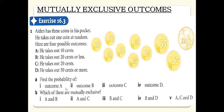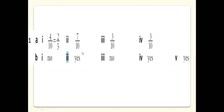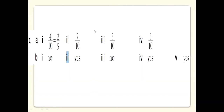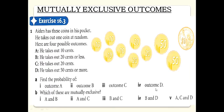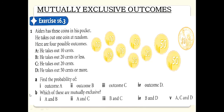For outcome B, 20 cents or less includes 20-cent and 10-cent coins — that is 3 plus 4, giving 7 total out of 10, so the probability is 7 out of 10. For outcome C, he takes out exactly 20 cents — there are only 3 of those, so the probability is 3 out of 10. For outcome D, 50 cents or more — there is one 50-cent and one dollar coin, so 3 coins total, giving a probability of 3 by 10.